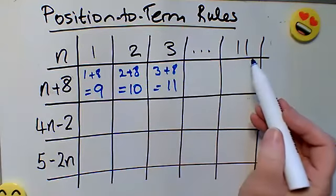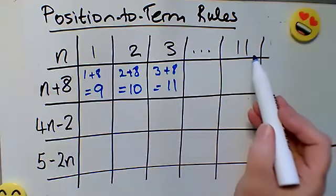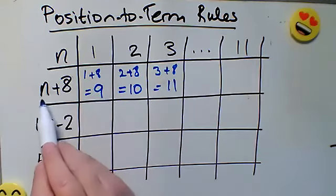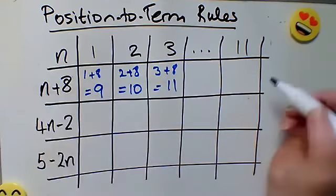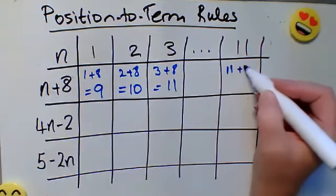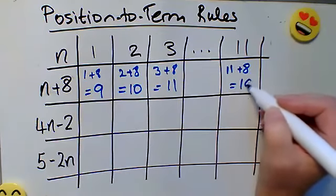We can skip right to whichever position in the sequence we're asked to find the value of. In this case the 11th term in the sequence would be 11 plus 8 which would be 19.